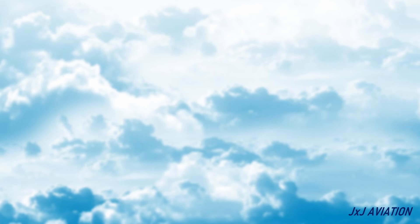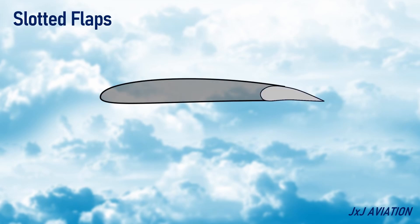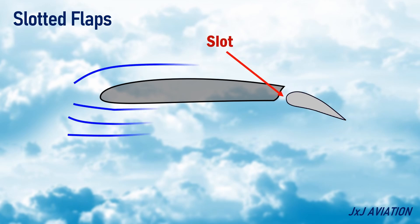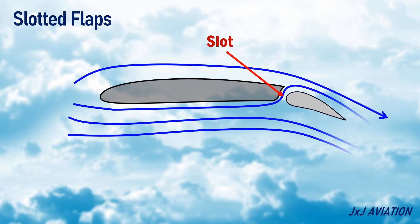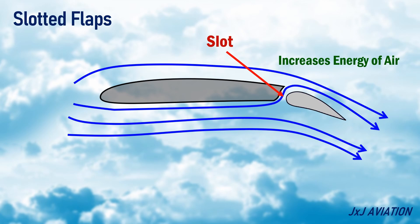Slotted flaps: when these flaps are extended, there is a slot created between the wing and the flaps. The high pressure air from the bottom of the wing flows through the slots and over the flaps. This increases the energy of the air on the top surface of the wing and prevents flow separation. The result is more lift and less drag.